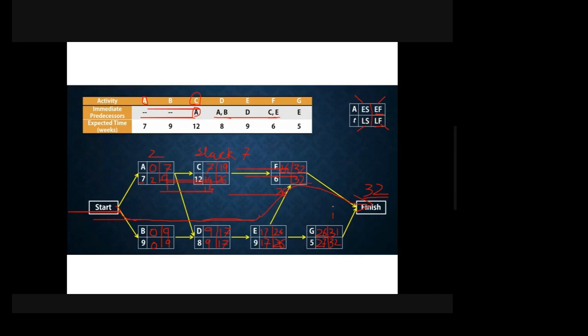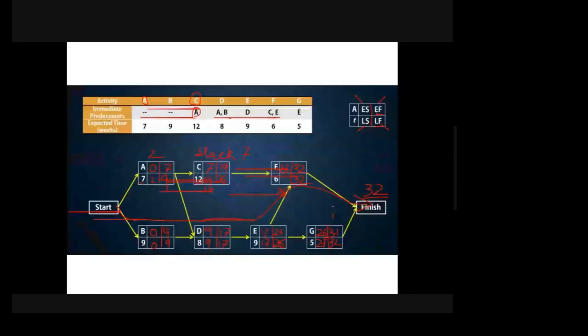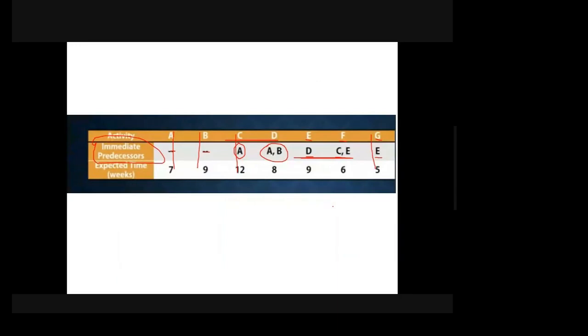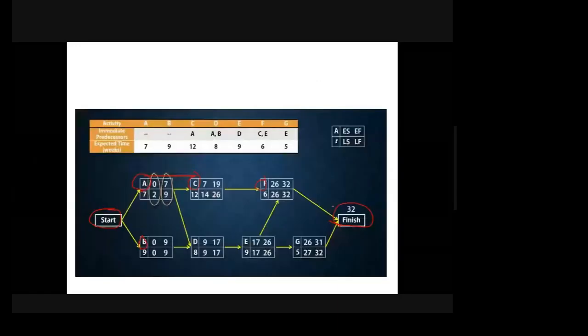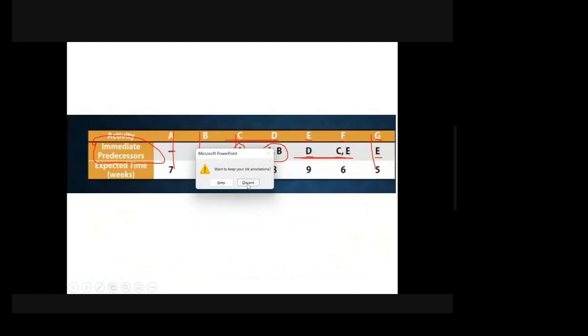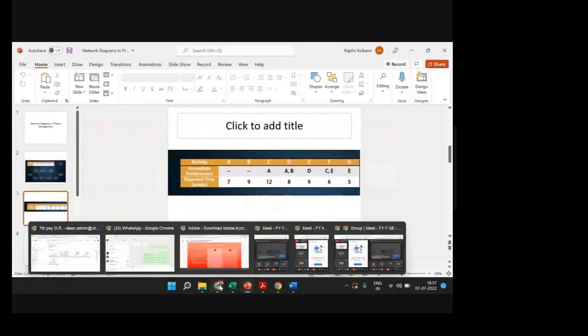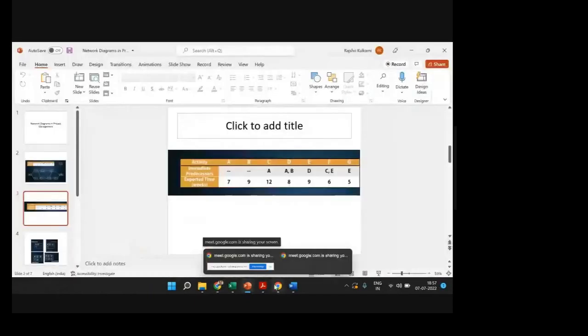The critical path is the shortest possible timeline for finishing the project on time — you cannot finish faster than this, and any delays on these activities will delay the entire project. You can annotate on the shared slide and submit the project, writing a comment stating what the earliest start, latest start, earliest finish, and latest finish times are. This is a very important aspect of project management and will help everyone working in the field.